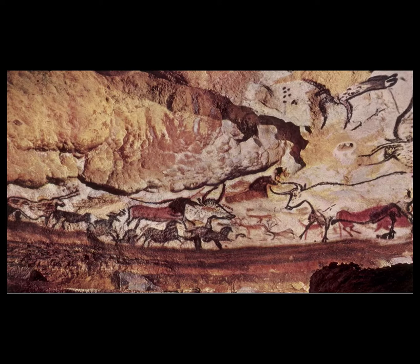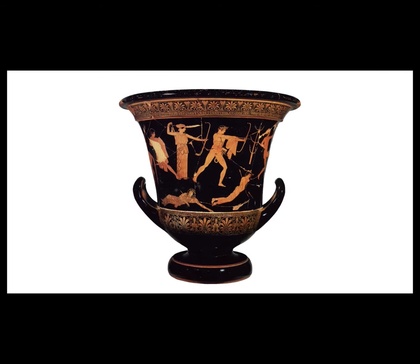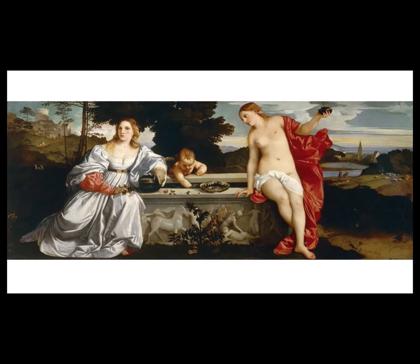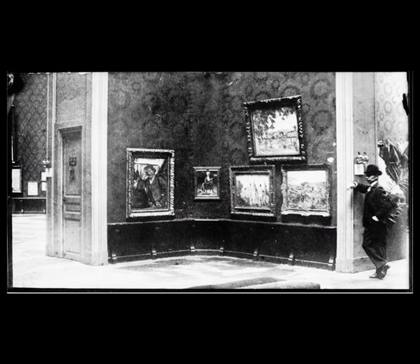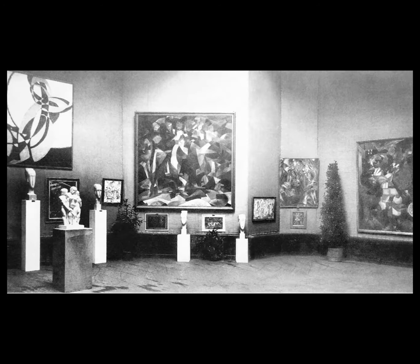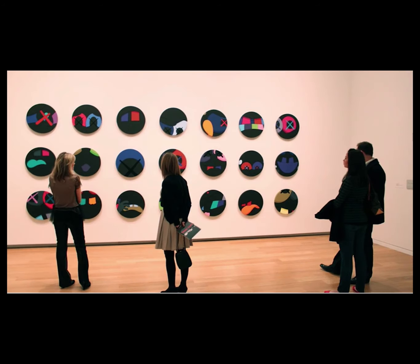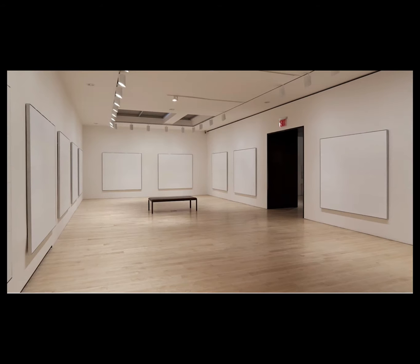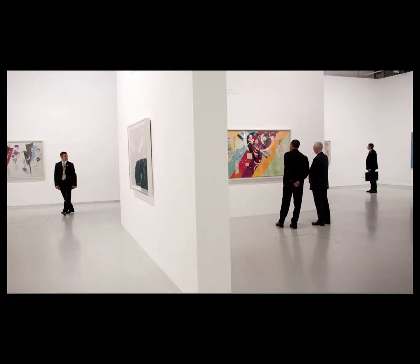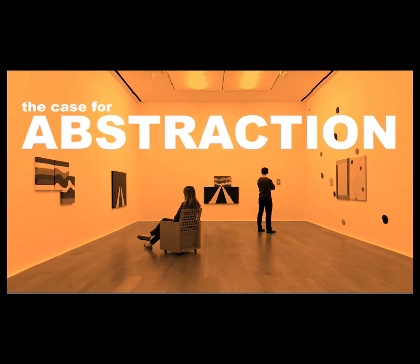For much of human history, when people set out to make art they did so by trying to represent things as they appeared in the world around them. Then about a hundred years ago, a bunch of artists stopped trying to do that. It was shocking — this is not what art was supposed to be or do, and no one was given a compass for navigating this new art terrain. It still upsets and confounds: how are we supposed to deal with art completely untethered from the world of recognizable objects, and more importantly, why should we?